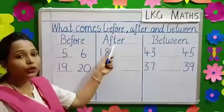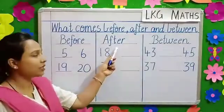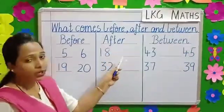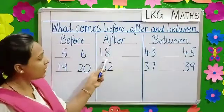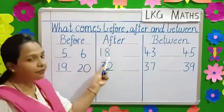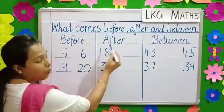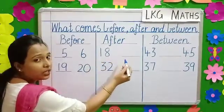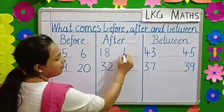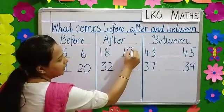Next, we have come to what comes after. Here, we write the number that comes after the given number. The given number here is 18. What comes after 18 children? 19.